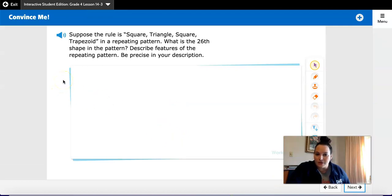Suppose the rule is square, triangle, square, trapezoid in a repeating pattern. What is the 26th shape in the pattern? Describe features of the repeating pattern.